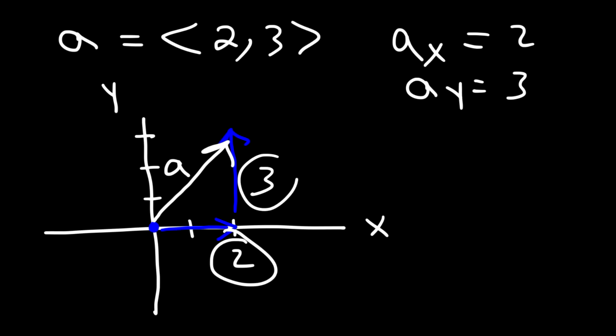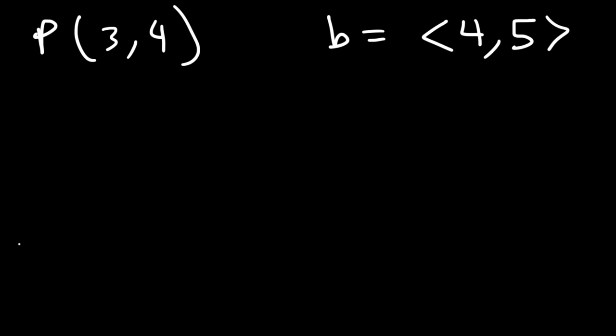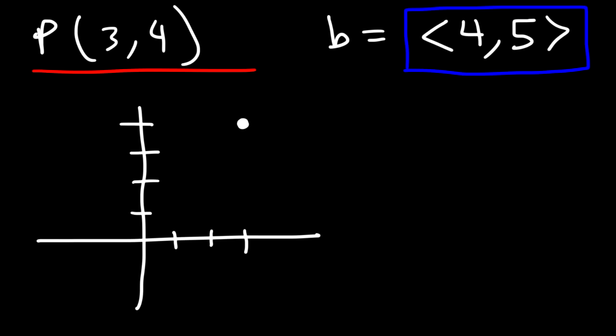You need to be able to distinguish a point from a vector. A point uses parentheses — for example, the point (3, 4). A vector, say vector B, uses angle bracket symbols, like ⟨4, 5⟩. You wouldn't use parentheses to represent a vector. To represent a vector in component form, use those angle brackets instead of parentheses. If plotted, a point is simply a dot in space — not a directed line segment.